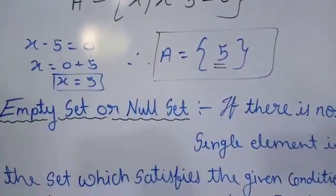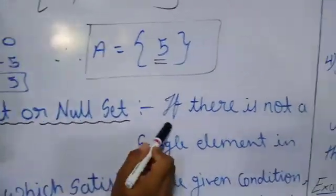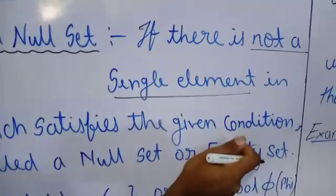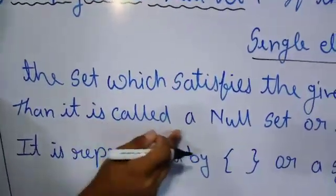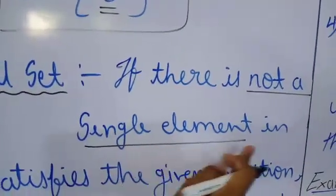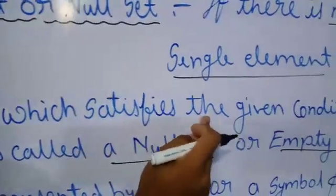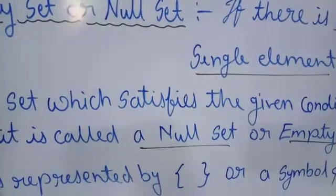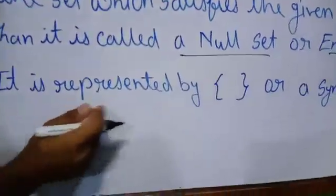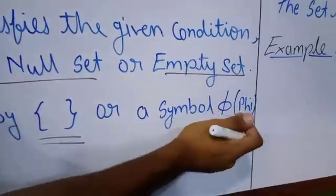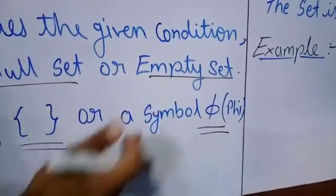Empty set, or null set — we can say empty set or null set. If there is not a single element in the set which satisfies the given condition, then it is called a null set or empty set. It is represented by empty curly brackets, or by the symbol phi. This is the symbol of the null set or empty set.